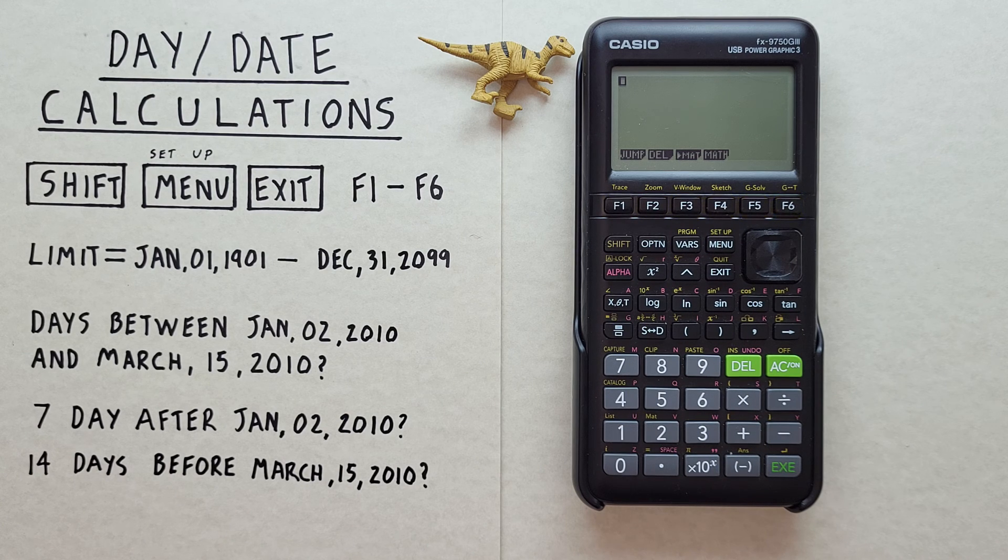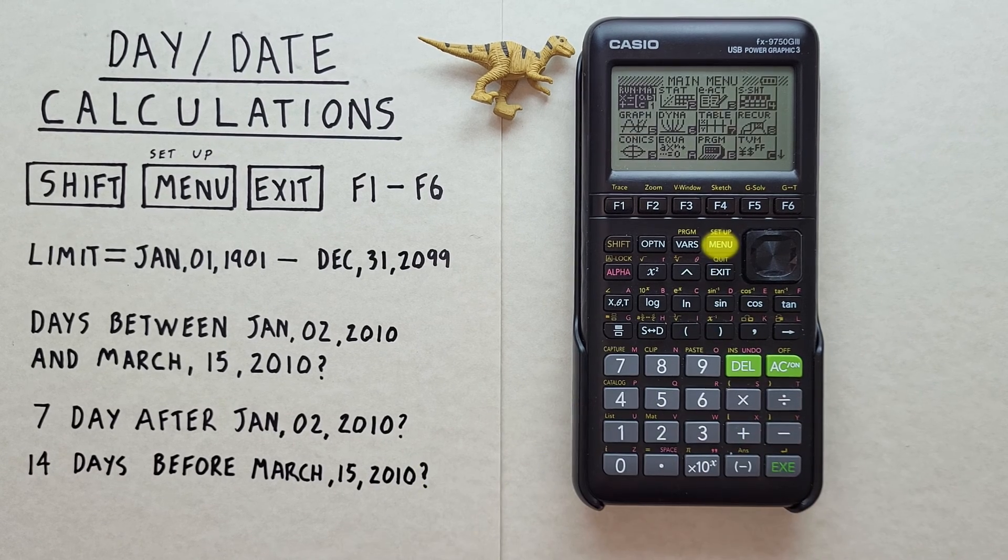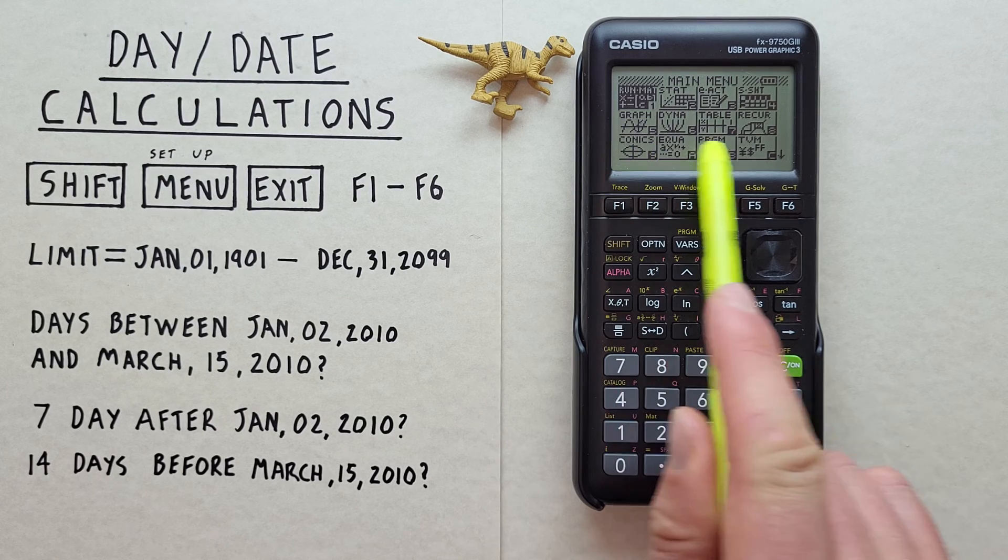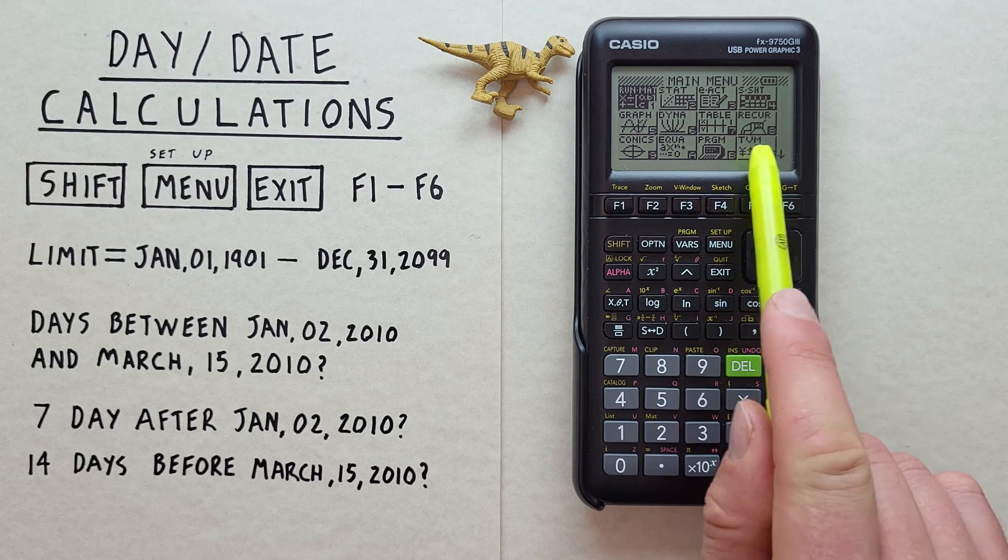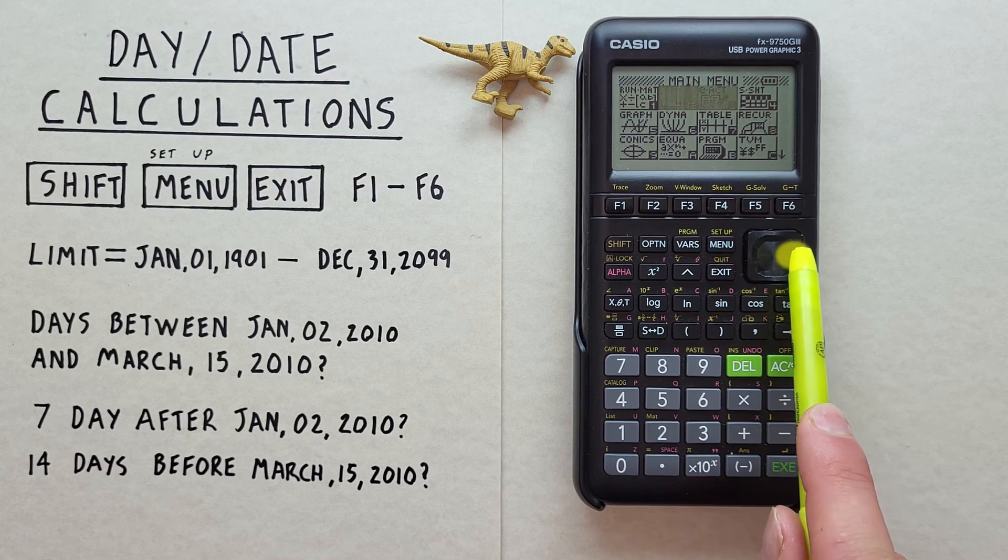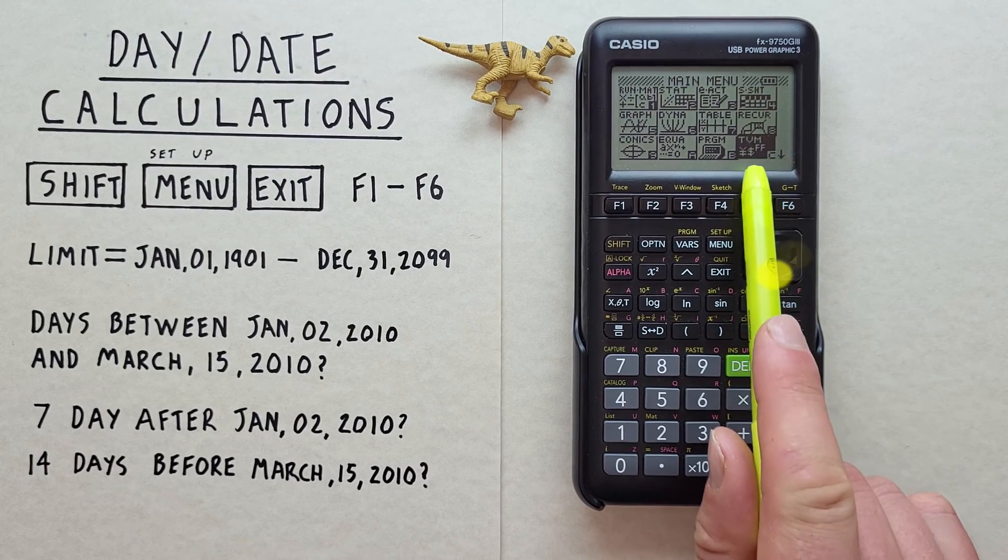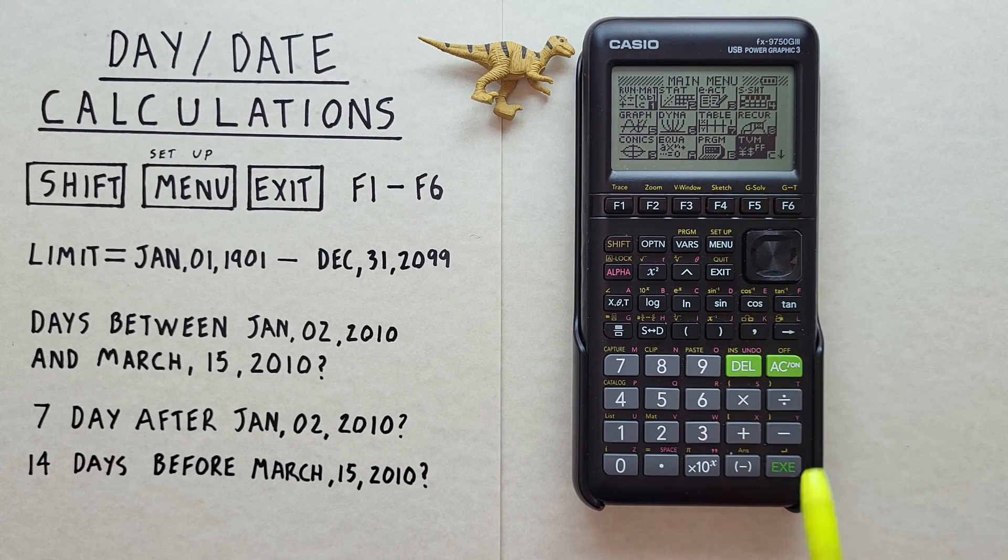To get started with this we first need to navigate to the TVM app. To do this we press the menu key bringing us to the main menu and then we need to go down to this TVM here. So we scroll over and down so that it's highlighted and press EXE.